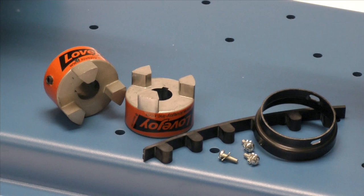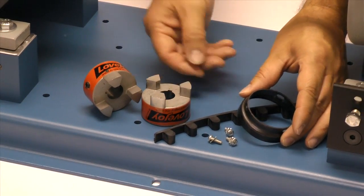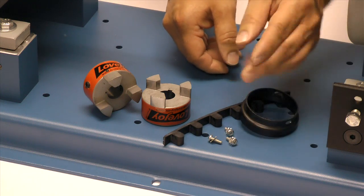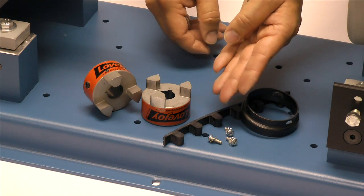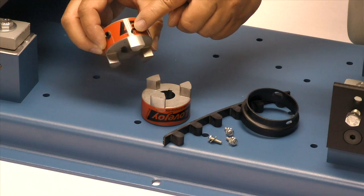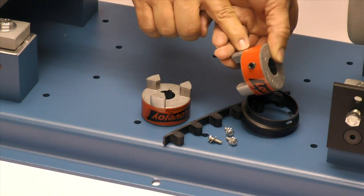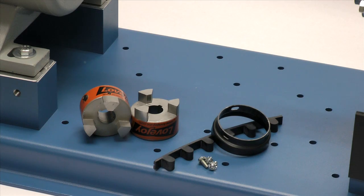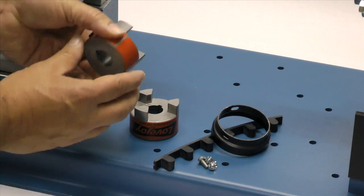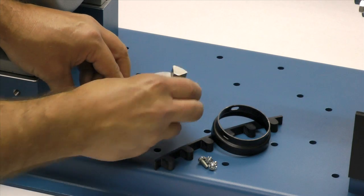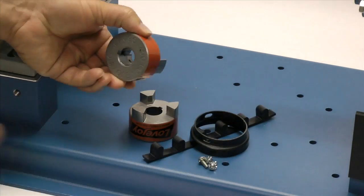The following components are provided with the purchase of your Lovejoy LC jaw style coupling. You should have two jaw style hubs, a snap wrap spider, a retaining collar, and the screws needed to hold the collar in place. Note that one hub has tapped holes for the screws. Always inspect the components to ensure you have received the proper parts and review your application details.